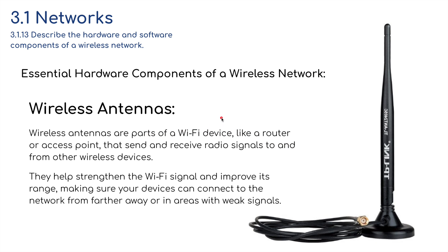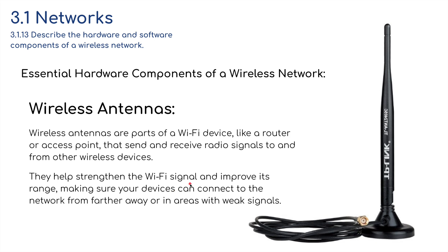We have wireless antennas. Wireless antennas are part of a Wi-Fi device like a router or access point that send and receive radio signals to and from other wireless devices. They help strengthen the Wi-Fi signal and improve its range, making sure your devices can connect to the network from further away or in areas with weak signals.